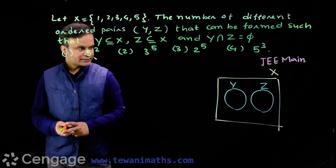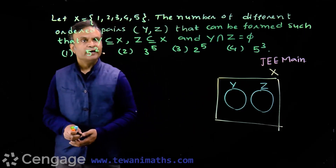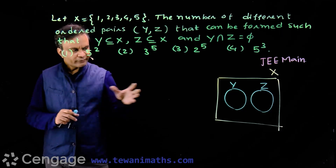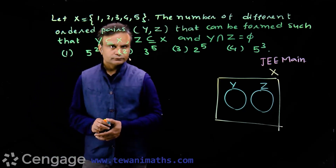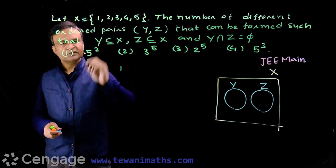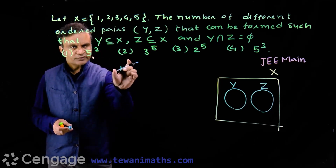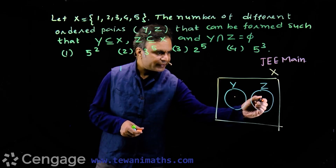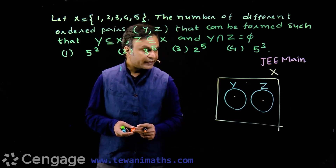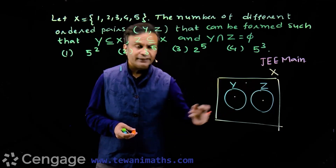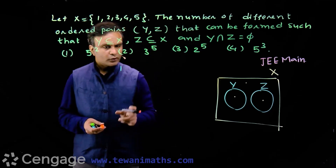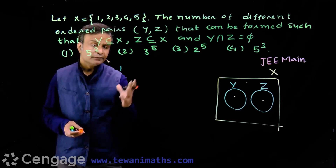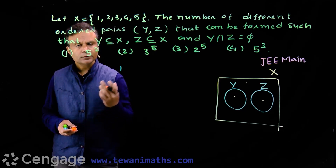We have to find the number of ways we can form these two sets Y and Z — that is, the number of ordered pairs of sets Y and Z. How can we do this using the concept of distribution? I pick the first element of this set, element 1. Where can I put this element in the Venn diagram? I have three options.